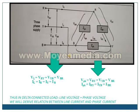Now, the conclusion is: on the line side and on the phase side, what we observe is that line voltage is equal to phase voltage. Whereas we need to derive the relation between line current and phase current in case of delta connected load.